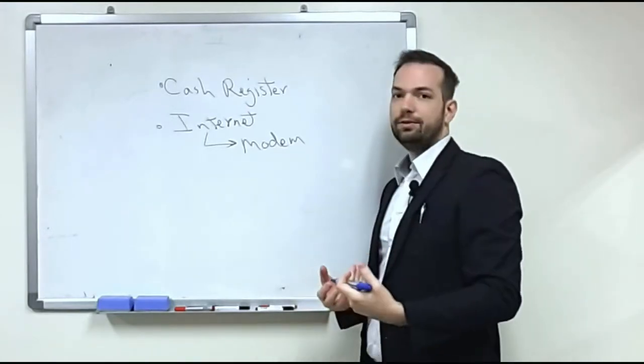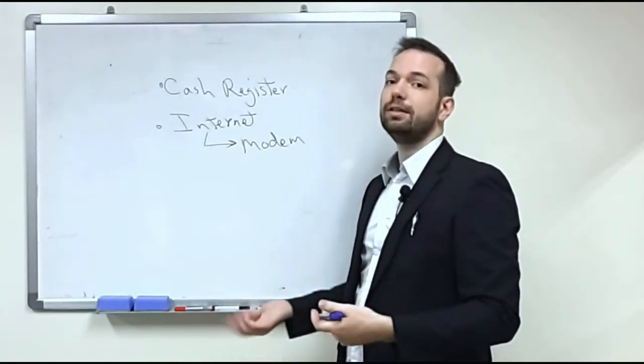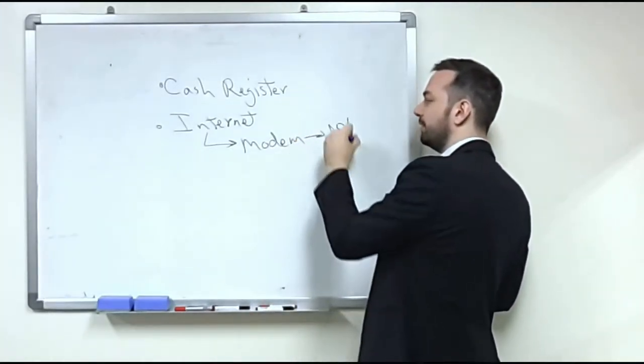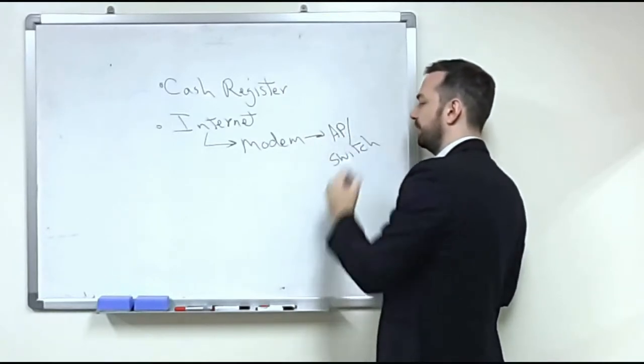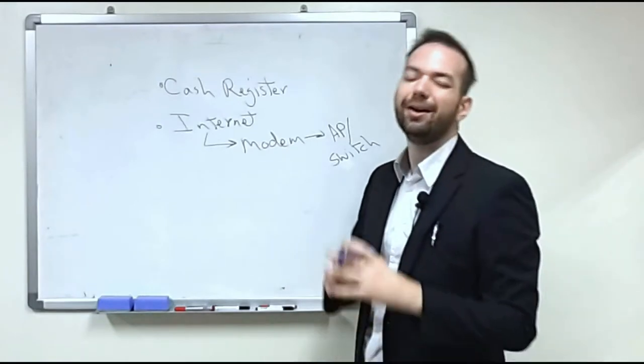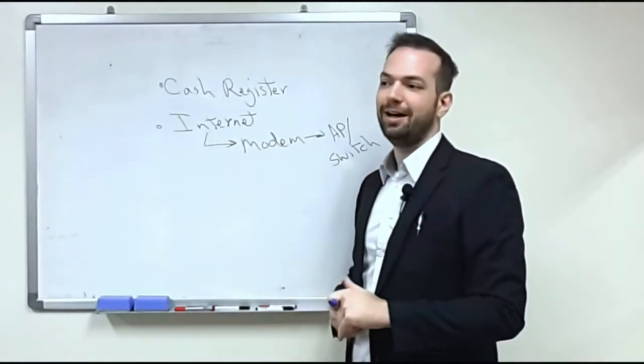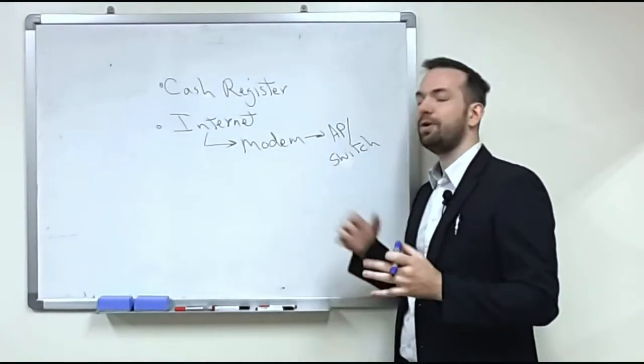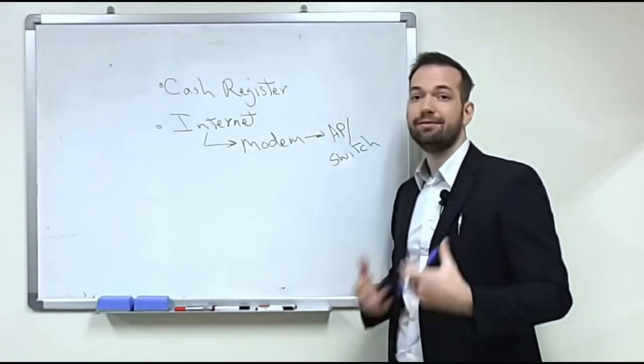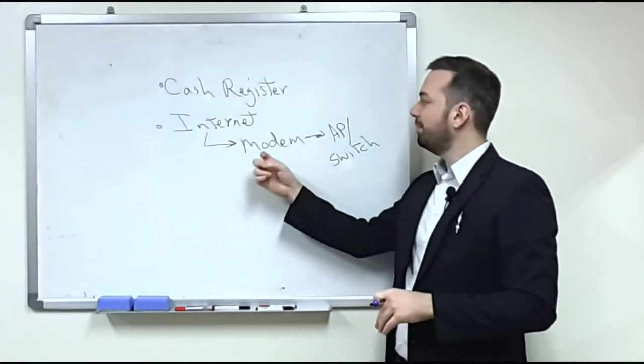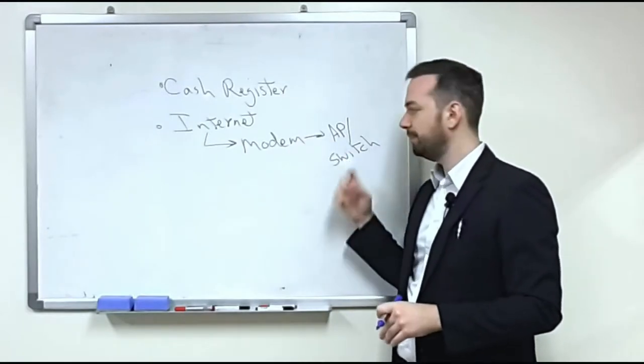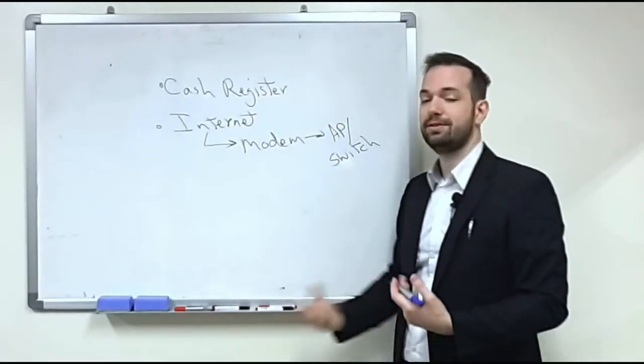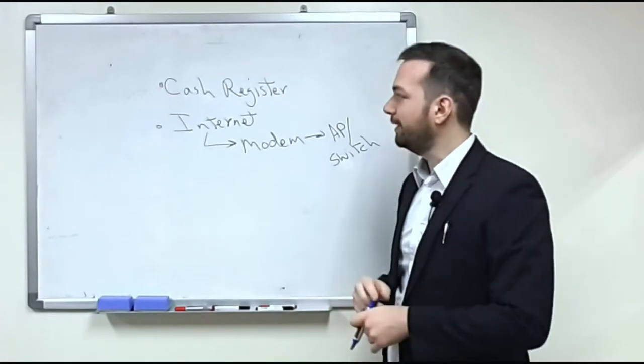To be able to use the internet or have multiple computers on the internet at the same time, they probably connect the modem into a wireless access point or a switch. A wireless access point or a switch are very common. You have them in your homes, you see them in most businesses as well, especially switches. Not always access points but a growing number also have access points to give access to Wi-Fi. So they probably have a modem going into an access point and a switch and then that provides the cash register internet and sometimes the customers, sometimes the employees.